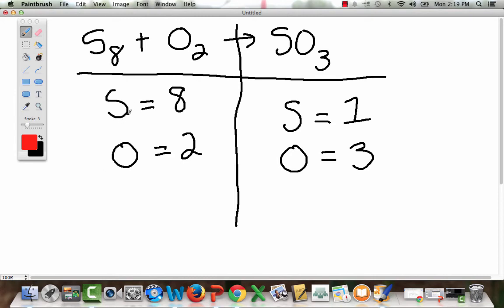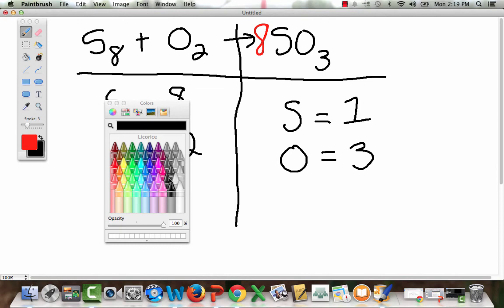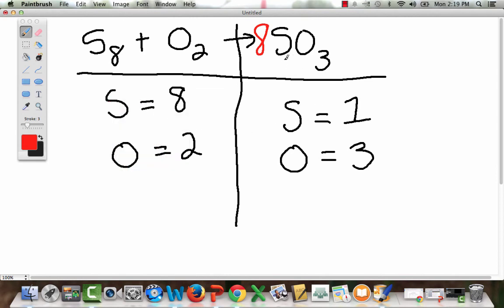So, if I have 8 sulfur over here on the reactant side, I need to get 8 over here. Well, what times 1 is going to give me 8? Well, that's 8. So, let's stick it here. Now, once I do that, what is going to happen to our count? Well, our count is going to go from, now, instead of just being 1, we have 8. So, you can cross it out. Now, we have 8.